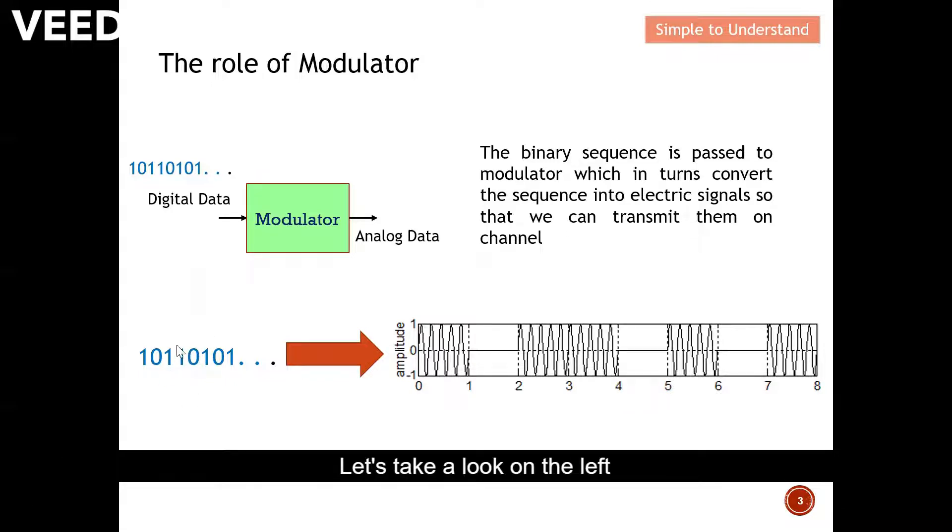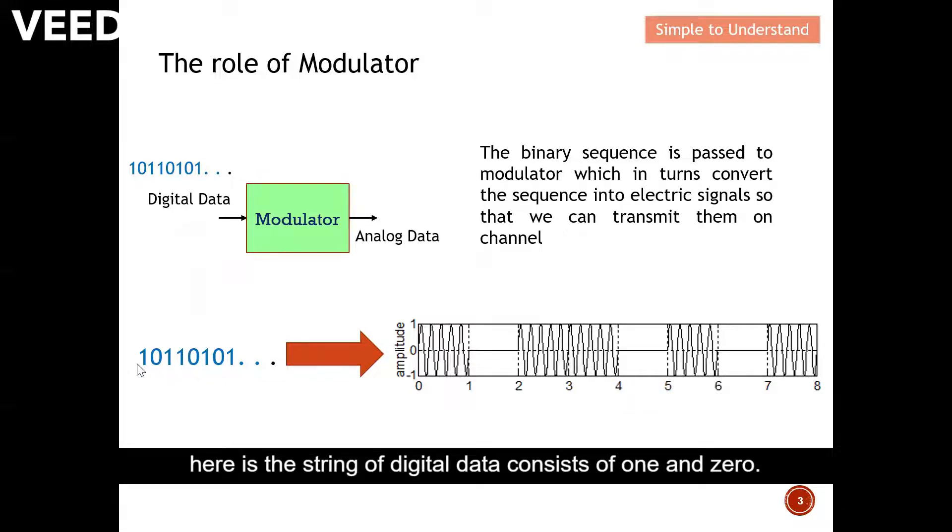Let's take a look on the left here is the string of digital data consists of 1 and 0. After the converter, it can be represented by analog data as shown on the right here.